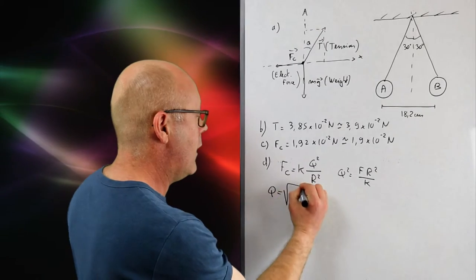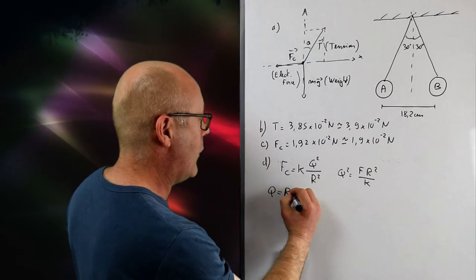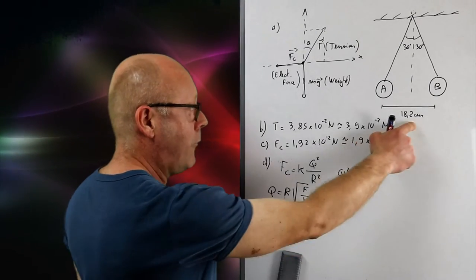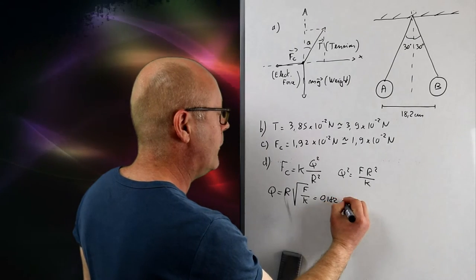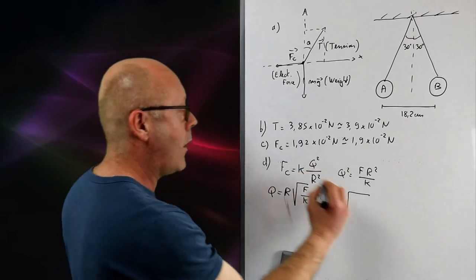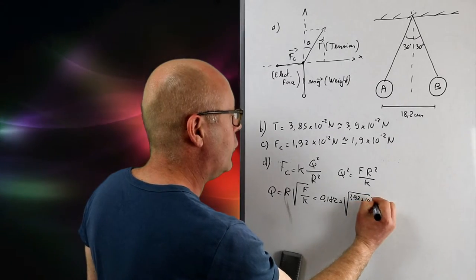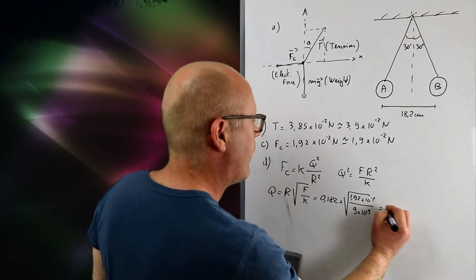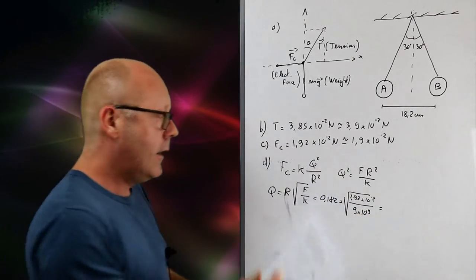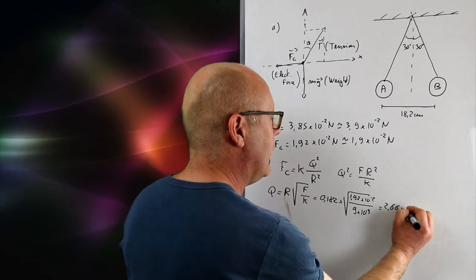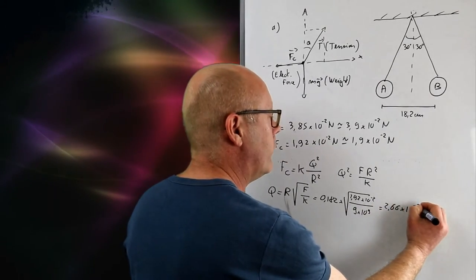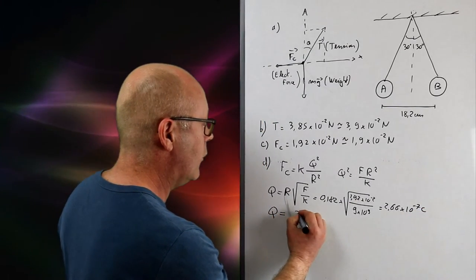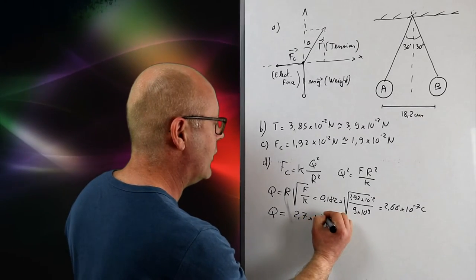Or better, I take the square root. And I can actually put R outside of the square root: R times square root of F over K. I plug in the numbers. Be careful, this is centimeters. 0.182 multiplied by the square root of 1.92 by 10 to the minus 2 newtons divided by the Coulomb constant, 9 by 10 to the 9. And the answer I find is 2.66 by 10 to the minus 7 Coulomb. That is, for the final answer in the answer box, 2.7 by 10 to the minus 7 Coulomb.